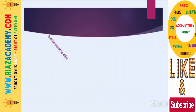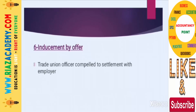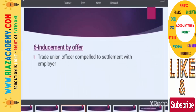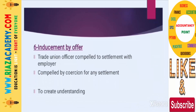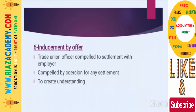Point number seven is inducement by offer — making an offer to induce any trade union officer, where the employer offers to settle matters in exchange for cooperation. This constitutes an unfair labor practice.